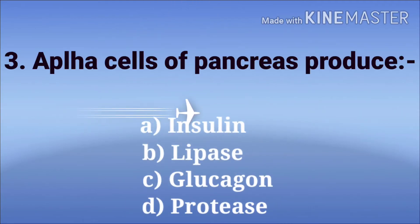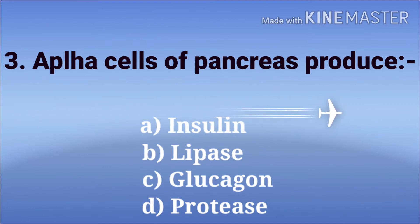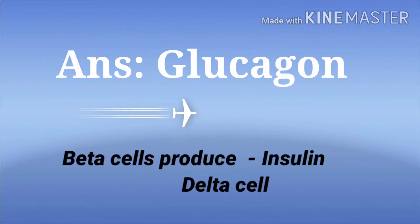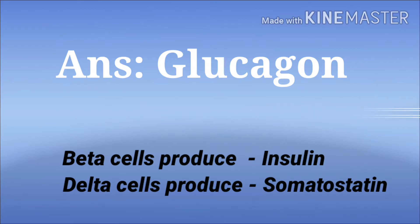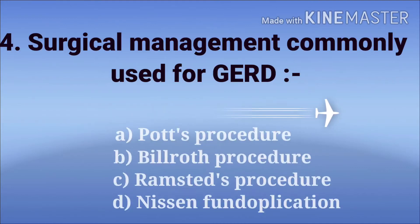Next question: alpha cells of pancreas produce. The options are insulin, lipase, glucagon, and protease. The answer is glucagon. The alpha cells produce glucagon, beta cells of pancreas produce insulin, and delta cells produce somatostatin.